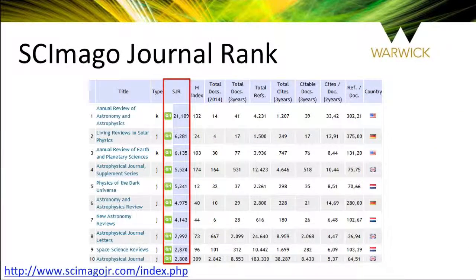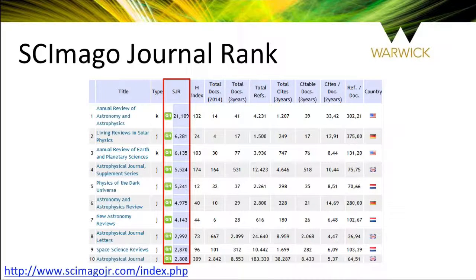The SJR is an abbreviation for Scimago Journal Ranking and is an alternative to the more traditional impact factor. The SJR is based on citation data provided by Scopus rather than Web of Science and so can give different results to the JCR. But as Scopus indexes a larger number of journals than Web of Science, some journals appear in the SJR but not in the JCR. The SJR can be accessed openly online at the link shown at the bottom of the slide and in the description.